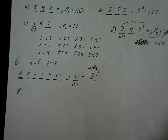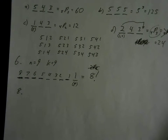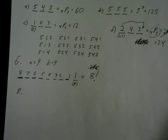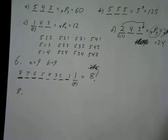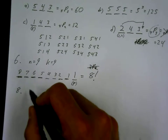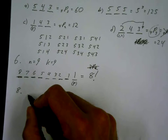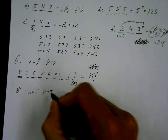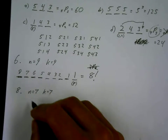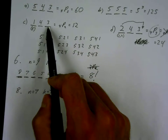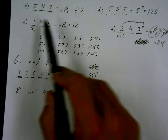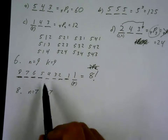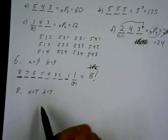Question eight: Emilio has picked up textbooks for the seven courses he will study this year. In how many ways can he arrange them on his bookshelf if he wants to keep the French and German texts side by side? n = 7, k = 7 — this is a full permutation. We have seven seats.